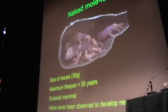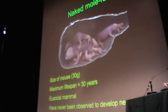A few things about this animal: it's a rodent, the size of a mouse. The average body mass is 30 grams, but it lives 30 years — 10 times longer than mice. Can you imagine extending a human lifespan 10 times? That's why we are going after the mechanisms that allow this animal to live 10 times longer than mice.